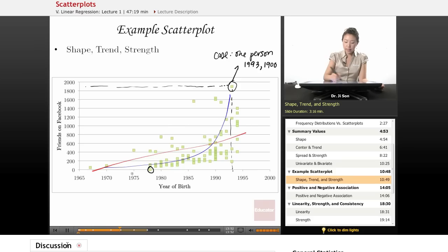And so let's think about that as the trend. So that's that trend, and the strength is that it seems maybe moderate strength. It's not hugging the line quite closely, but it's not just this amorphous blob either.